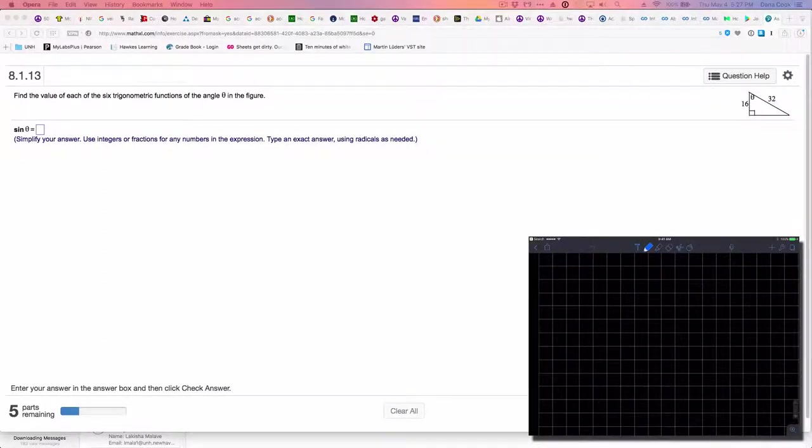This is problem 8.1.13 in Pearson's set of questions. Find the value of each of the six trigonometric functions of the angle theta in the figure. One thing I've seen students do, especially when taking an exam and maximizing the screen, is they're reading the question over here and thinking there's not enough information because they don't notice the tiny little triangle. So first we need to know that we have this triangle with these two side lengths.